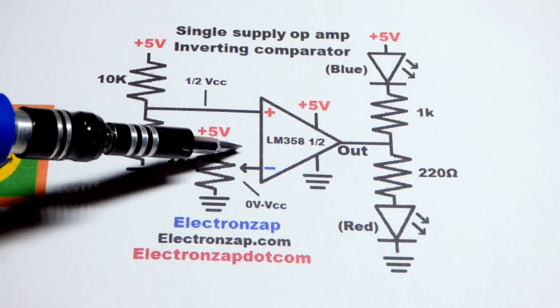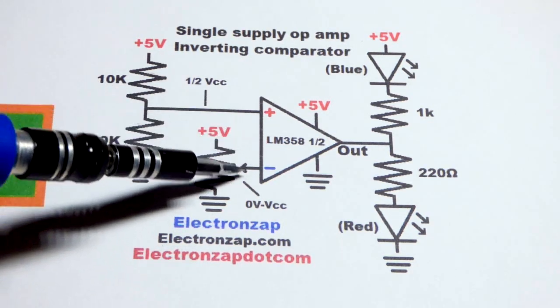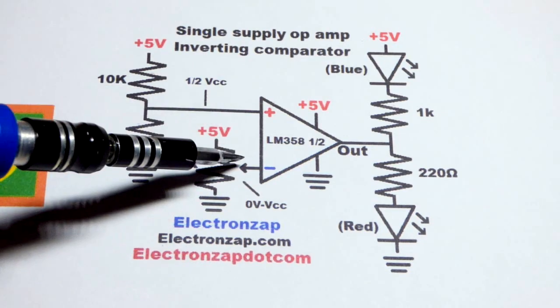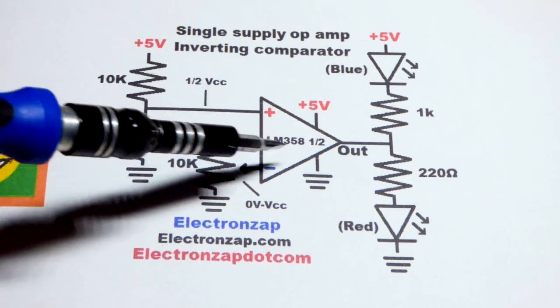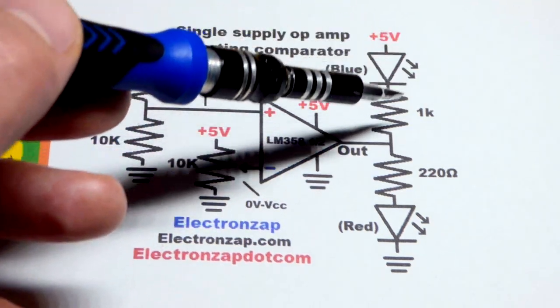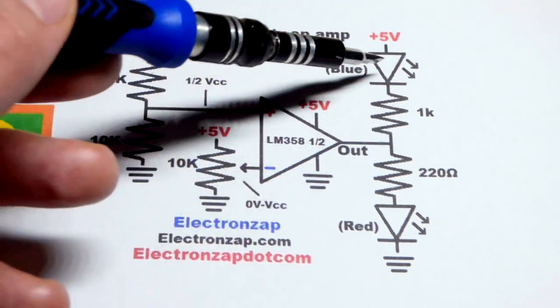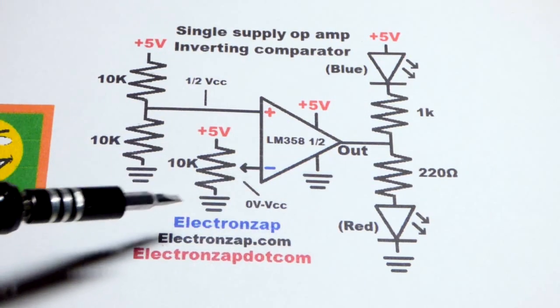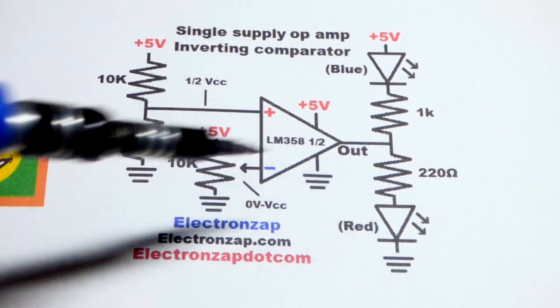And so our signal in right here, if we go above half of the supply voltage, then it'll be a higher voltage right there. The output will be low. Basically, it'll connect to ground. I have a blue LED to light up to let us know when we have a low output. I like blue for low and then red for high.